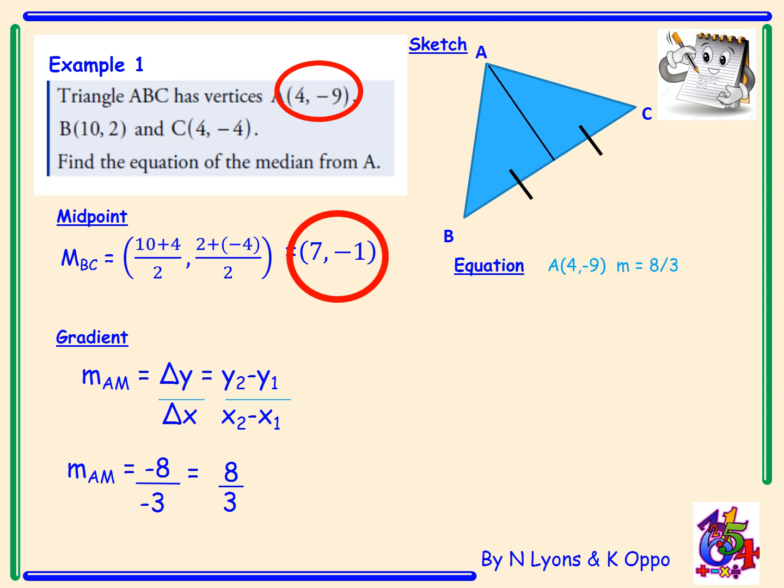We will use this gradient of 8/3 as well as the coordinates of A which is (4, -9) to get the equation of our median. It should be noted that you could also use your midpoint (7, -1) to get the equation. Y minus B equals M bracket X minus A. Y take away -9 equals 8/3, X take away 4.